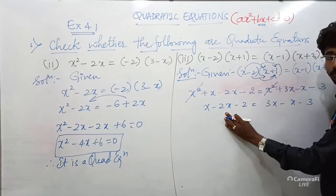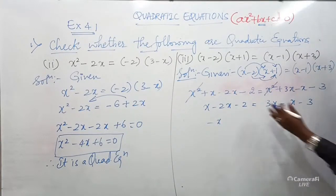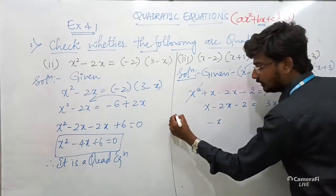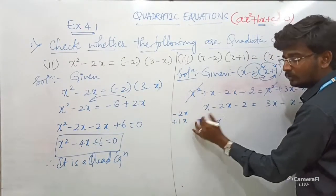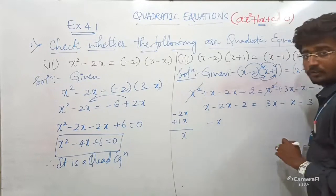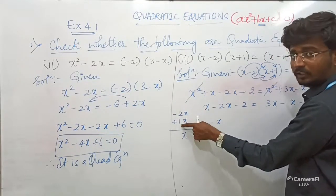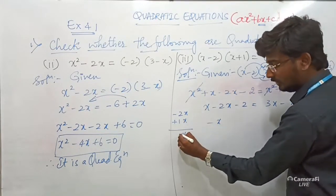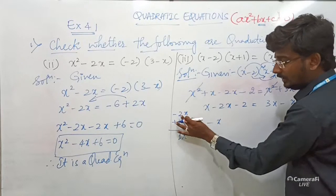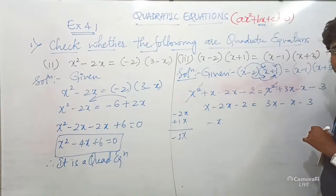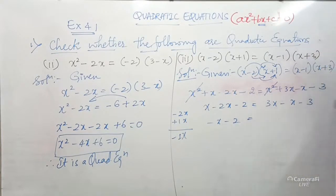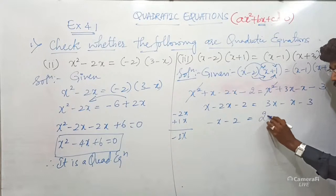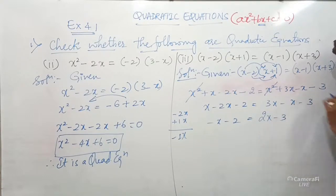After canceling X², what remains is: X + (−2X) − 2 = 3X + (−X) − 3. On the LHS, −2X + X = −X, so −X − 2. On the RHS, 3X − X = 2X, so 2X − 3.